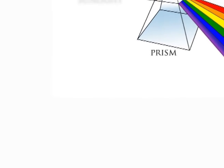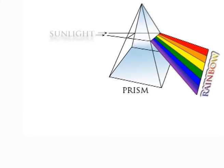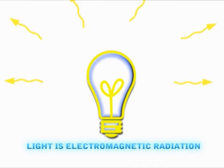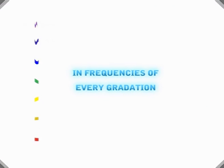If you take a prism and hang it in a window, it refracts the sun into a dancing rainbow. Light is electromagnetic radiation in frequencies of every gradation.